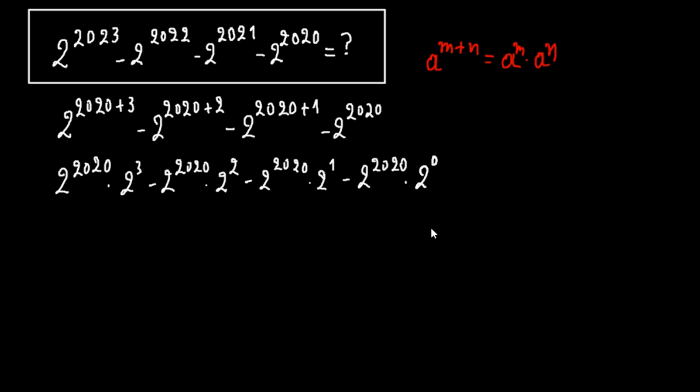2 to the 0 is 1. So here we see that we have this common factor. We can write it as 2 to the 2020 times, in parentheses, 2 to the 3 minus 2 to the 2 minus 2 to the 1 minus 2 to the 0.